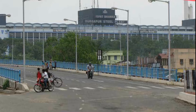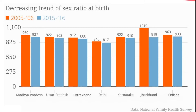Similarly, the Durgapur Steel Plant in West Bengal came up the same way when the public sector steel plant was set up with British collaboration. Sex ratio means the proportion of males and females in the total population. It is defined as the number of females per thousand males. In India, the sex ratio is 940, which implies that there are 940 females per thousand males.